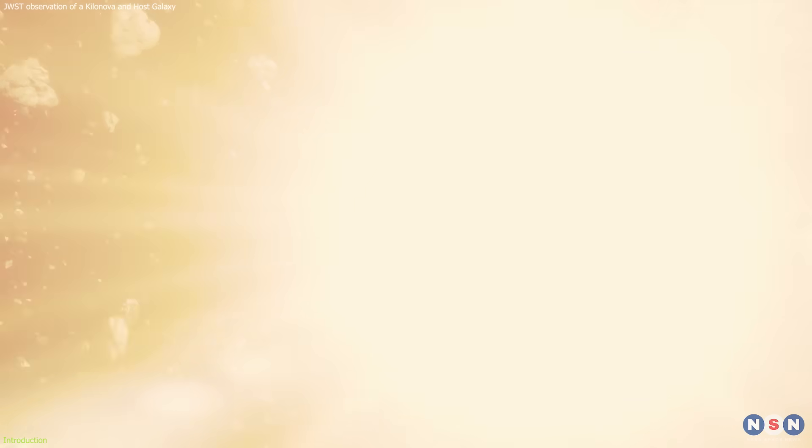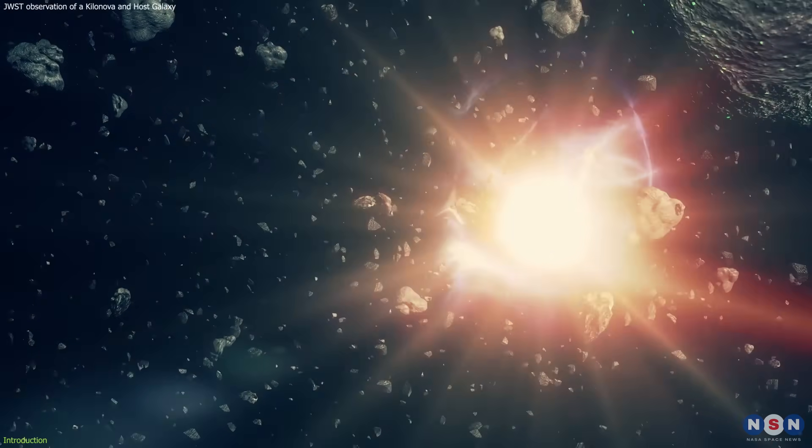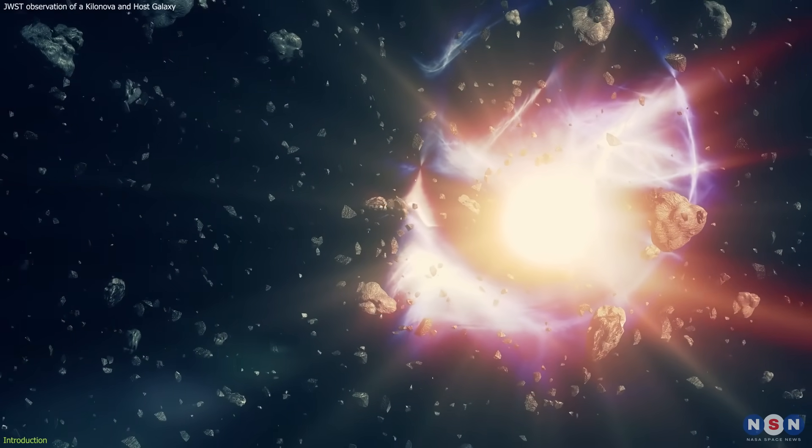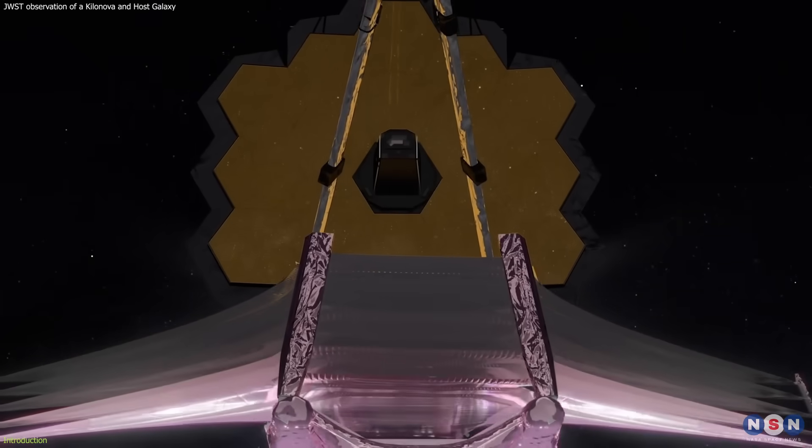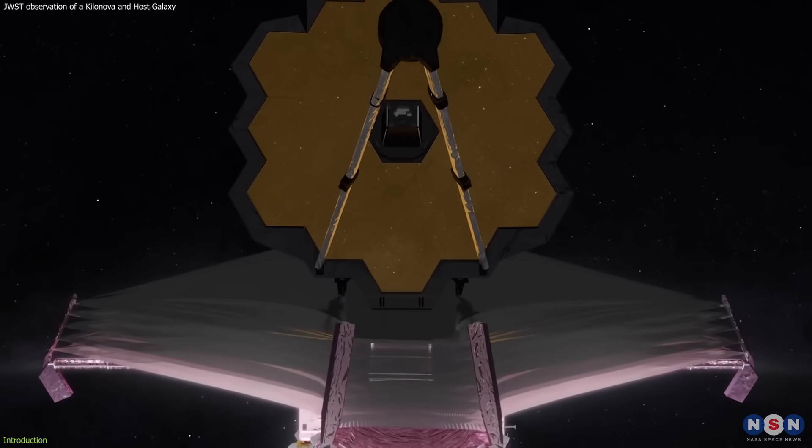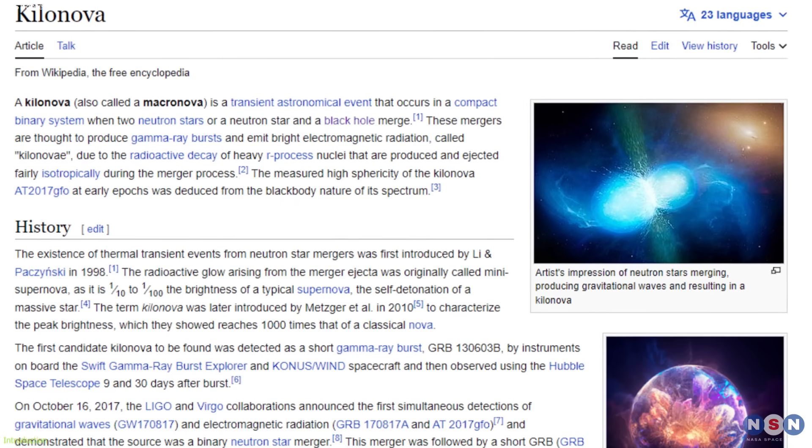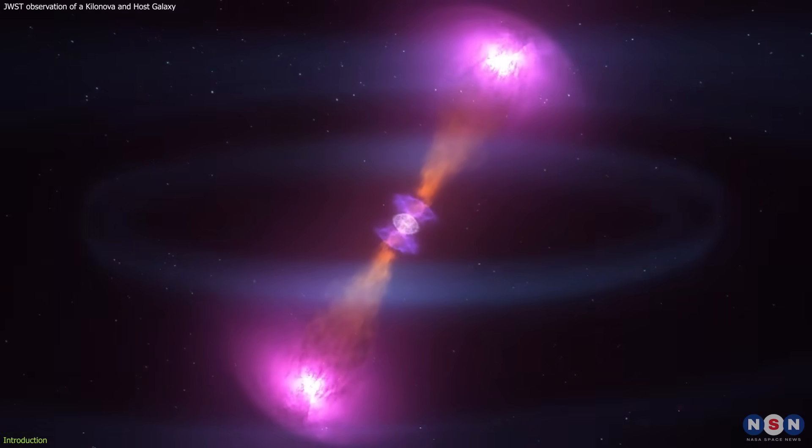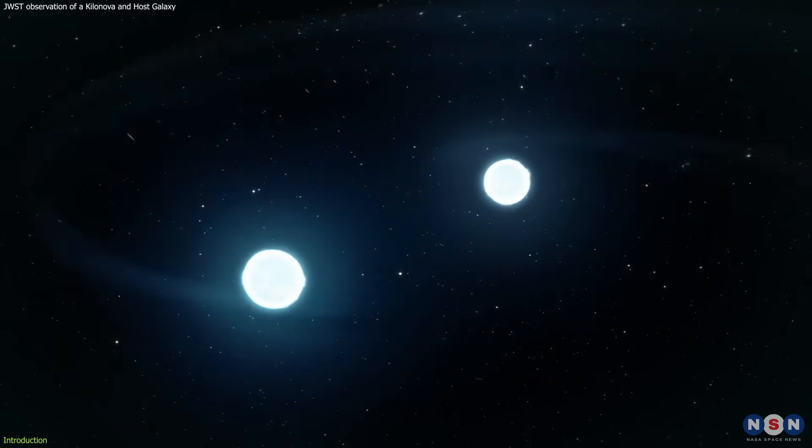They have observed a rare and spectacular event, a powerful explosion that occurred on March 7, 2023, using NASA's James Webb Space Telescope. This event is called a kilonova, and it is a powerful explosion that occurs when two neutron stars smash into each other.